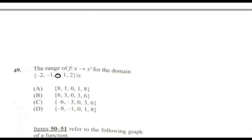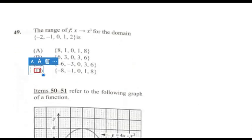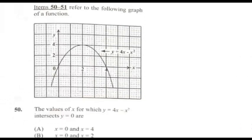Question 49: The range of f(x) = x³ for the domain {−2, −1, 0, 1, 2}. We cube each value: (−2)³ = −8, (−1)³ = −1, 0³ = 0, 1³ = 1, 2³ = 8. Option D is the only one that includes −8, and the full range is {−8, −1, 0, 1, 8}. Answer for 49 is D.